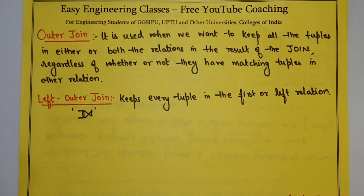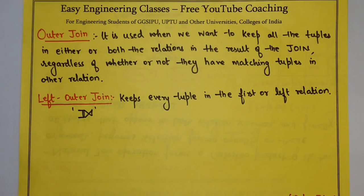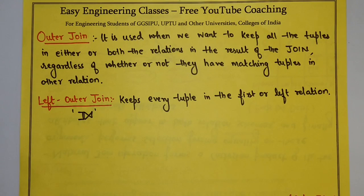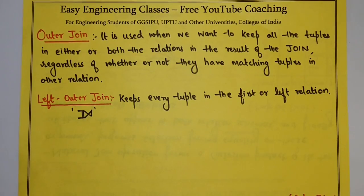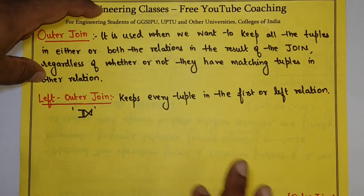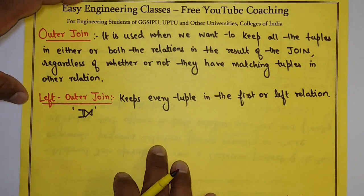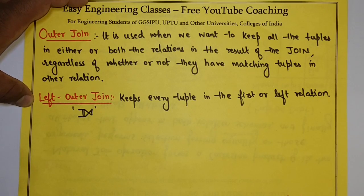Hello students, welcome to Easy Engineering Classes. Today in this lecture we will see the concept of outer join. Outer join is used when we want to keep all the tuples in either or both the relations in the result of the join, regardless of whether or not they have matching tuples in the other relation. In inner join, only the matching tuples are present in the result, whereas in outer join we can keep all the tuples from either or both relations.